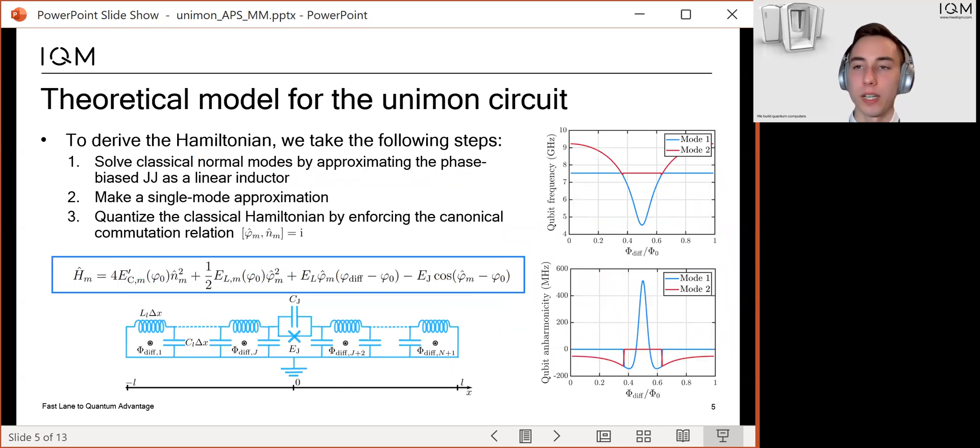Next, I will briefly explain the key ideas that I needed to derive the Hamiltonian of the distributed Unimon circuit. As the starting point, I used the distributed element circuit model shown at the bottom of the slide. And in the derivation, we take the following steps.